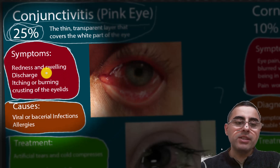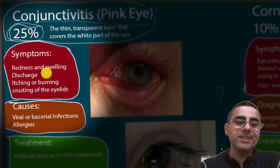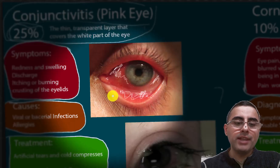Other symptoms include discharge from the eye, which can be clear, greenish, or yellow, as well as itching or burning, and crusting of the eyelids.